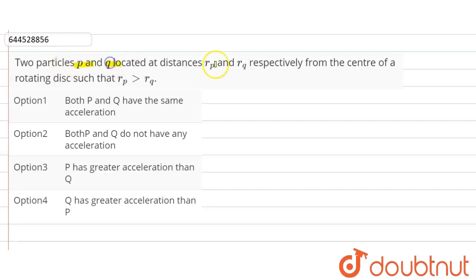Two particles P and Q located at the distance rp and rq respectively from the center of the rotating disk such that rp is greater than rq.